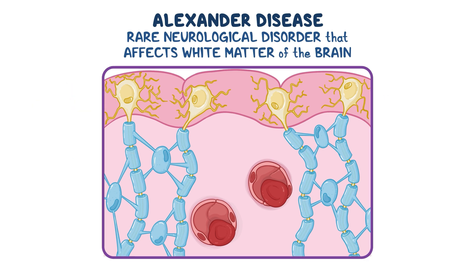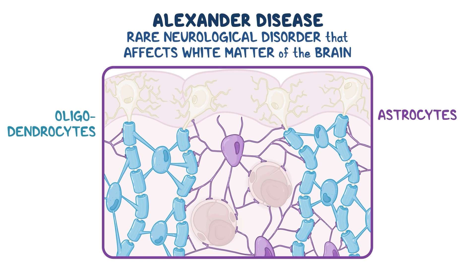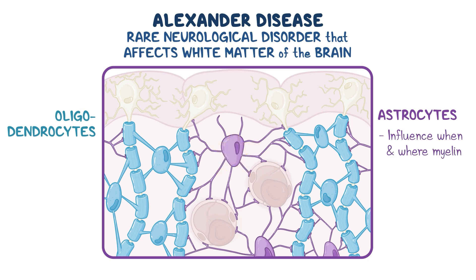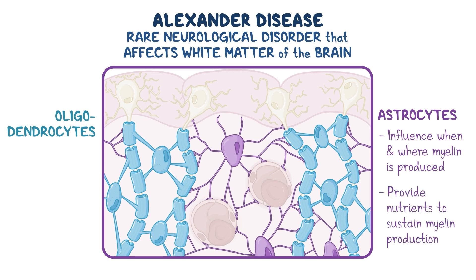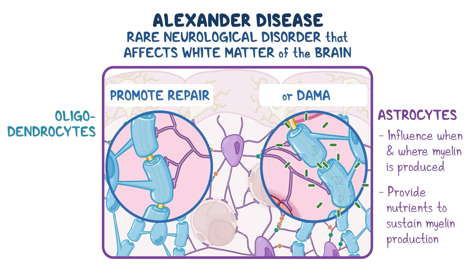The production of myelin depends on glial cells called oligodendrocytes, with support from astrocytes, which are glial cells that have processes coming off their cell body, giving them a star-shaped appearance. Astrocytes influence when and where myelin is produced. They provide nutrients to sustain myelin production, and release signaling molecules that can either promote repair or contribute to myelin damage.